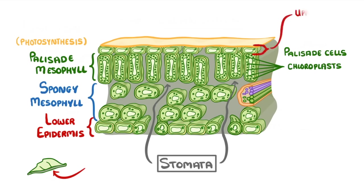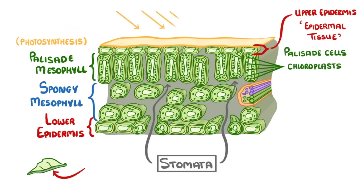Above this we have the upper epidermis, which is another layer of epidermal tissue. These cells are almost transparent, as the sunlight needs to be able to pass through them to get to the chloroplasts in the palisade cells beneath. And once photosynthesis has finally produced the sugar molecules, they're carried to the rest of the plant by these green tubes here, which we call the phloem.